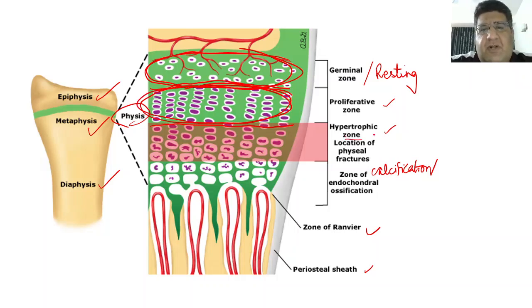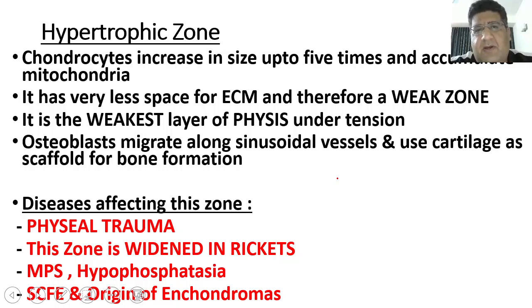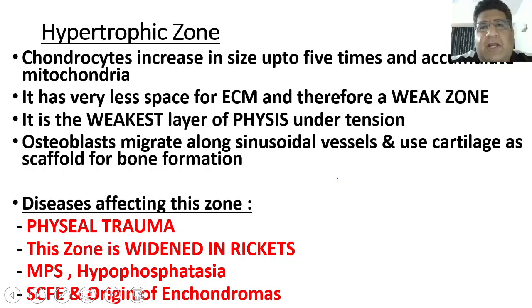After the proliferative zone, I come to the third zone: the hypertrophic zone, also called the maturation zone in certain books. What happens here is that chondrocytes increase in size — till now they were increasing in number, but now they increase in size and accumulate a lot of mitochondria. In the proliferative zone you had a lot of cellular proliferation and matrix production; here the cells occupy a lot of area — they've grown five times their original size — and you will see very little extracellular matrix.